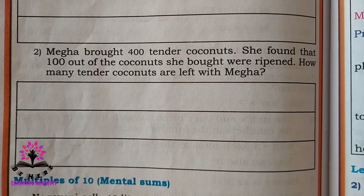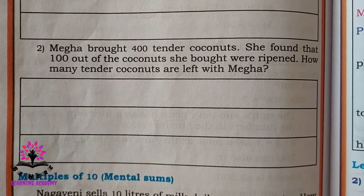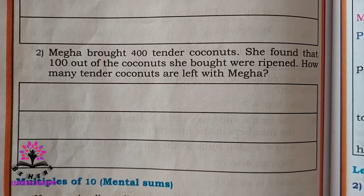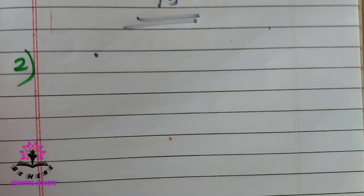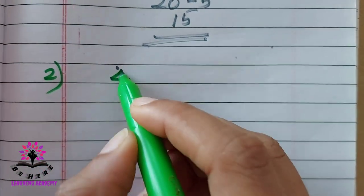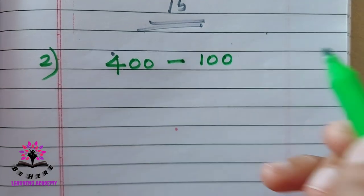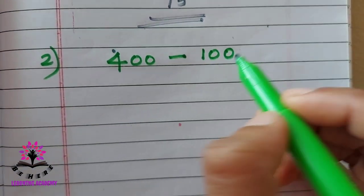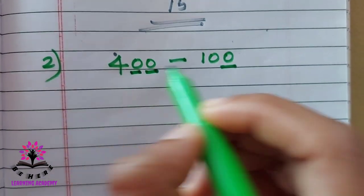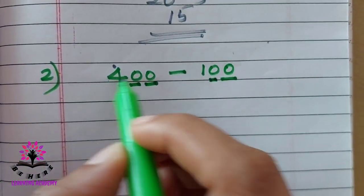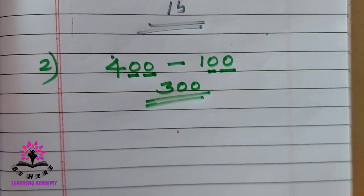Mega brought 400 tender coconuts. She found that 100 out of the coconuts were ripened. How many tender coconuts are left? Totally there were 400 tender coconuts and 100 were ripened. In the unit place it is 0, and in the tens place it is 0. So 4 minus 1 is 3, with two zeros as it is. The answer is 300.